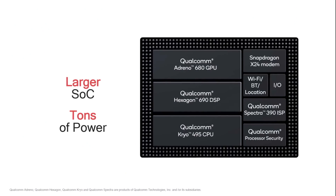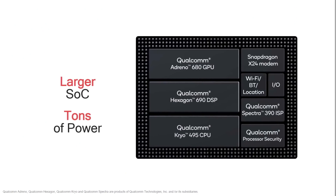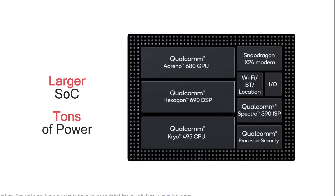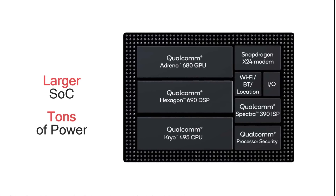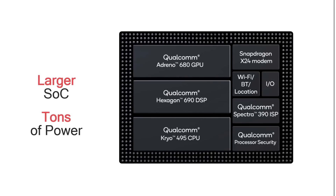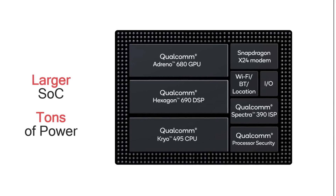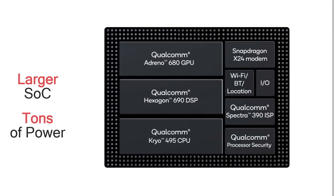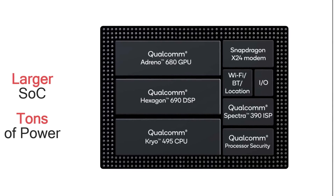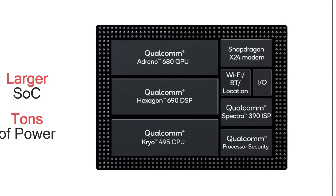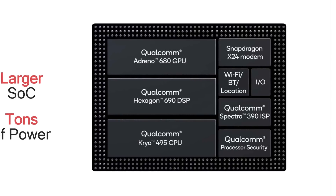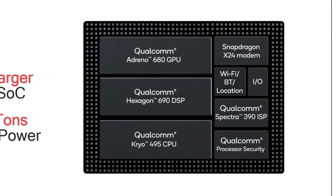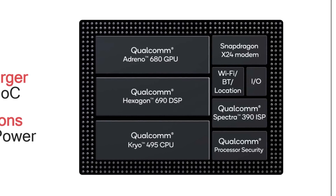Looking at the block diagram of the Snapdragon 8CX, you'll see it looks very similar to the Snapdragon 855. You've got a GPU, a DSP that also does AI, the CPU, a Snapdragon X24 modem for always-on LTE connectivity, an ISP for image signal processing, Wi-Fi, and Bluetooth. In that sense, it is certainly a relative of the Snapdragon 855.